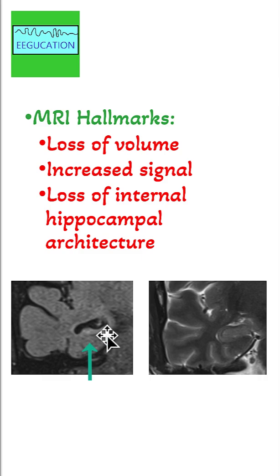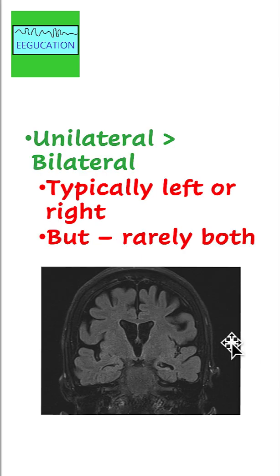So increased signal, loss of volume, loss of internal architecture — this is a normal hippocampus on the other image.